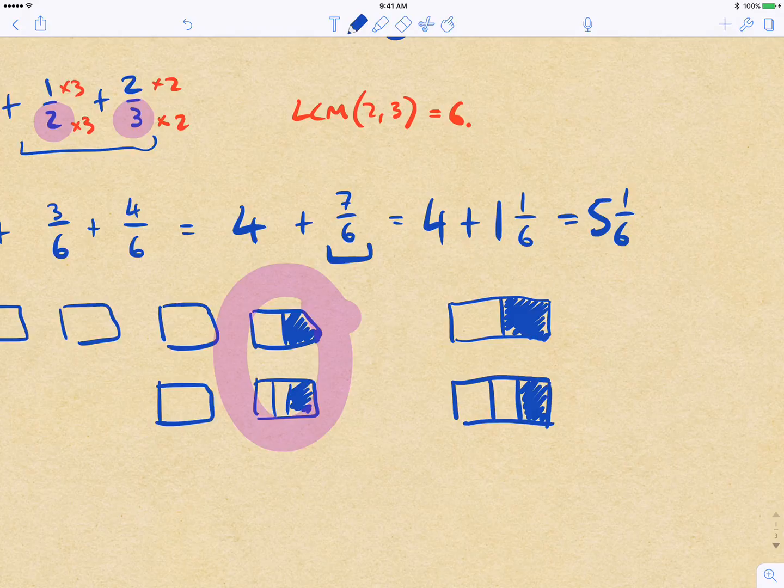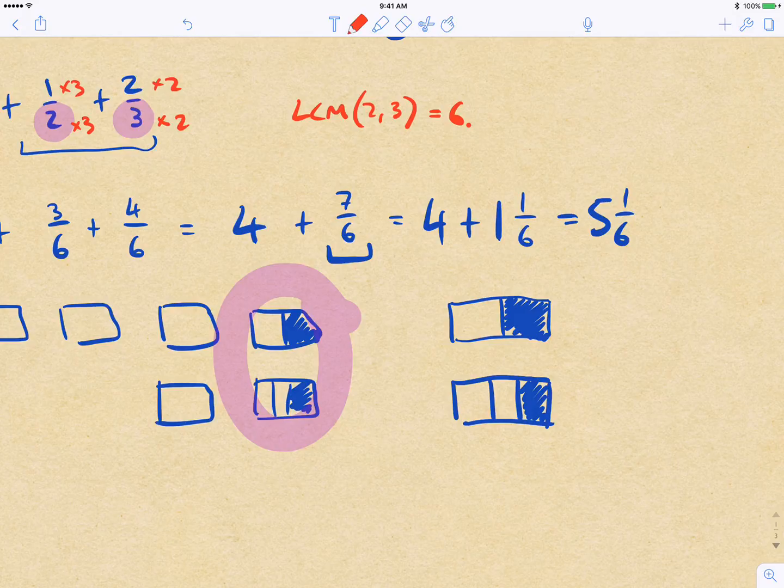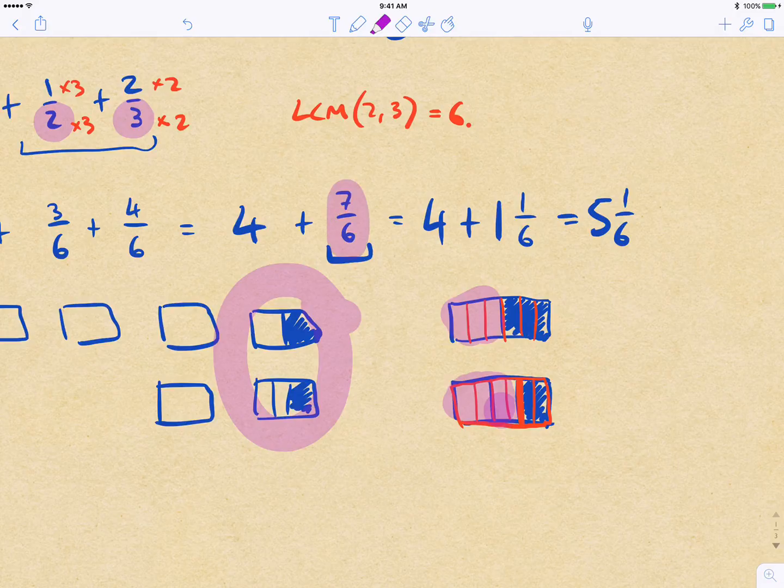And so by converting them into sixths, what I'm actually doing is re-chopping these up essentially. So in terms of the whole and how many sixths that is, we've got 1, 2, 3, 4, 5, 6. So 1 half is the same as 3 sixths. On this side, chopping each of these in half, we can see again visually that 2 thirds is the same as 4 sixths. So we're cutting them into pieces so that we can add them all together, and we can see again visually that we have 4 plus 3 equals 7 sixths all up here, which is what we got there.